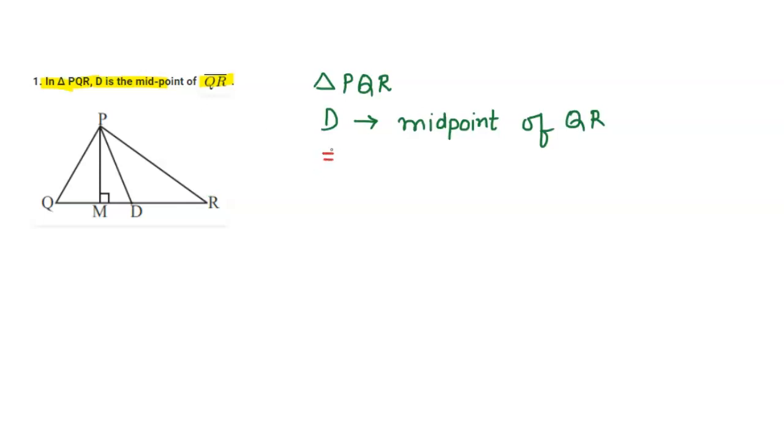Since D is the midpoint, this means that QD equals DR. This is also given in the question. Now in the first part of the question...